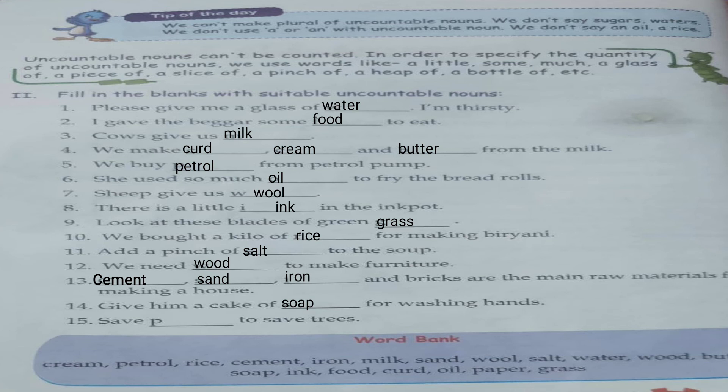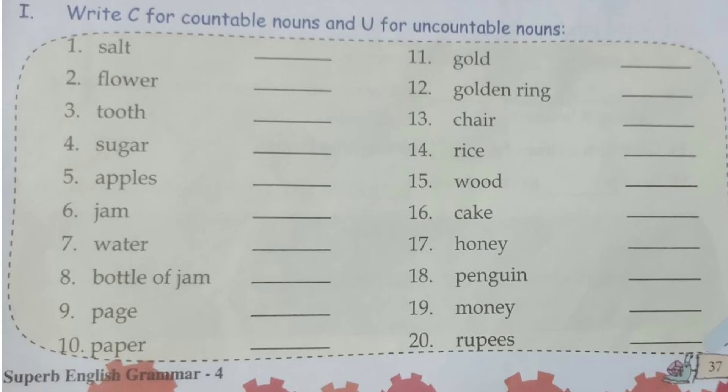'Save ___ to save trees.' The word starts with P — that is paper. Save paper to save trees.